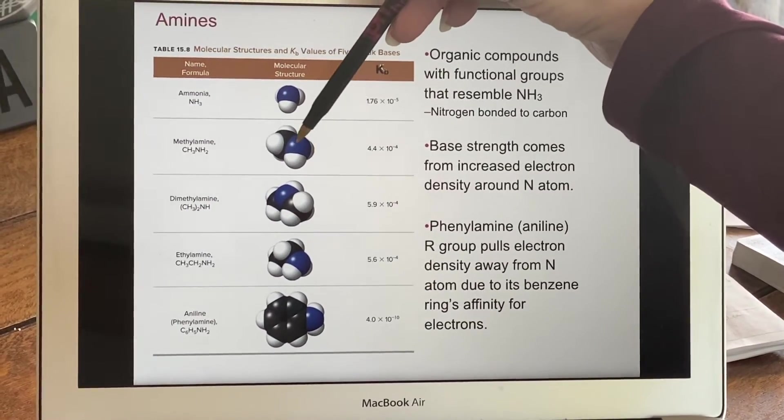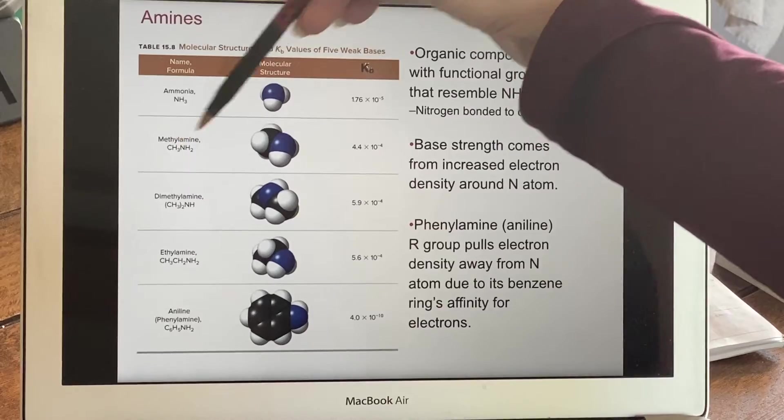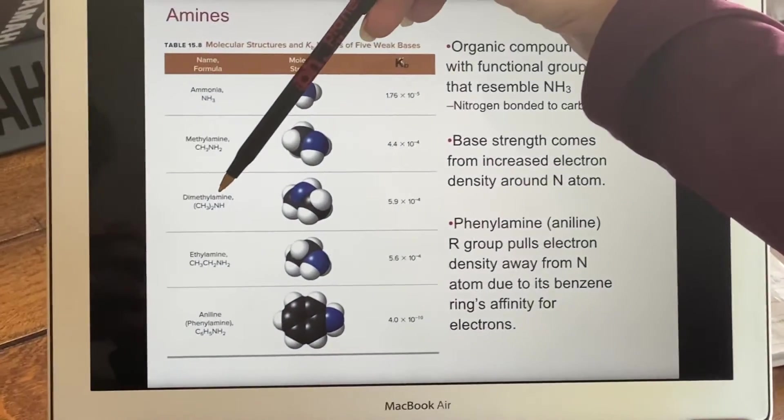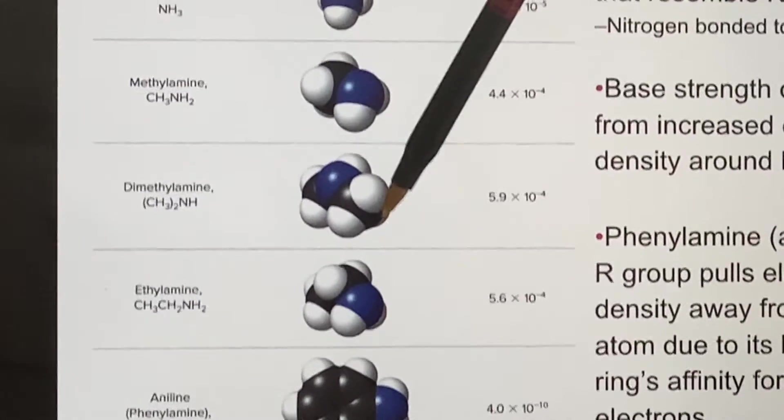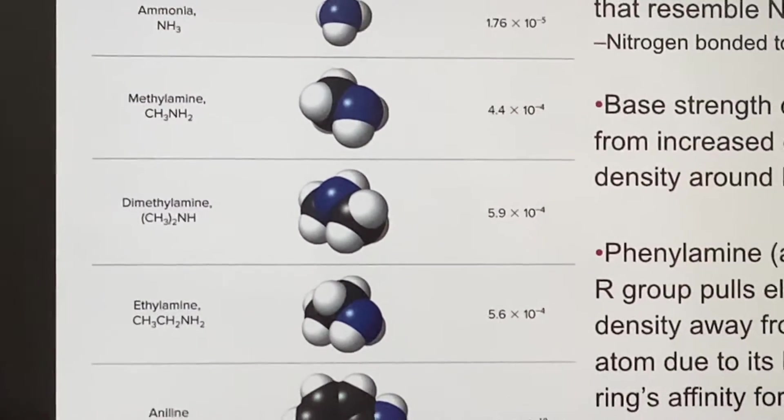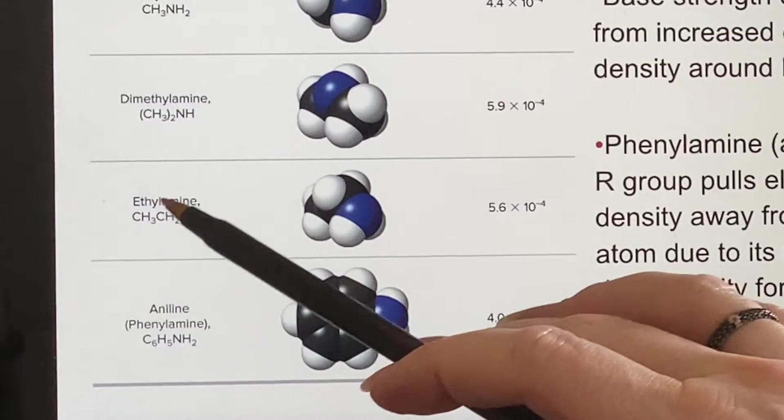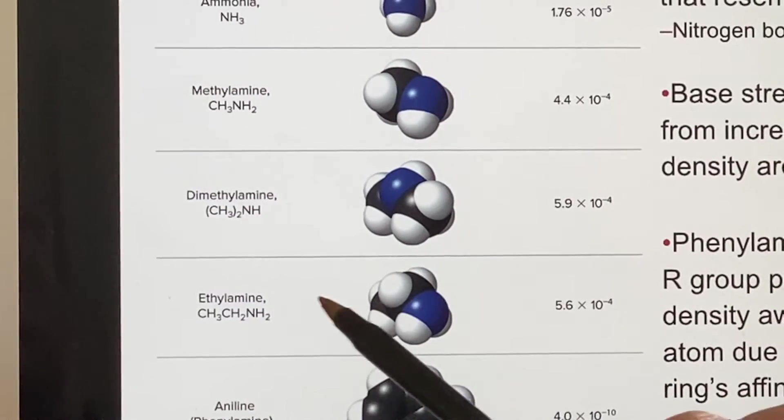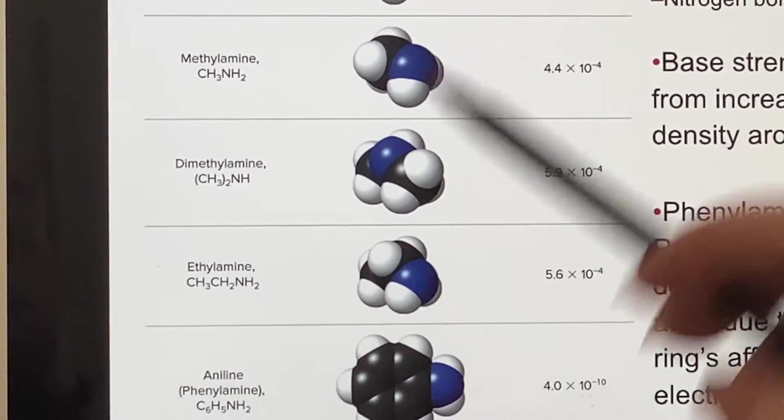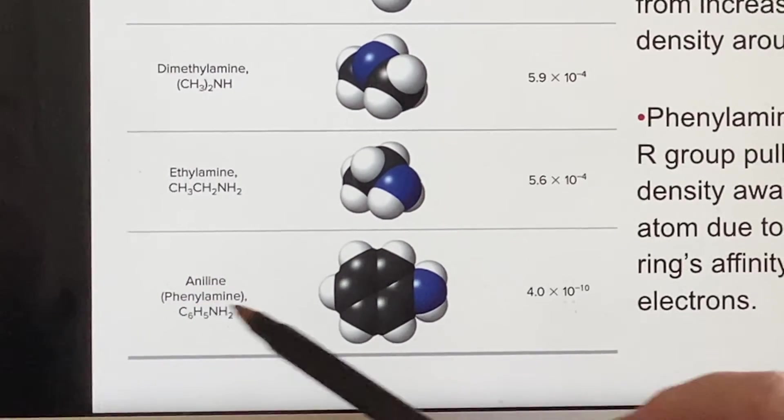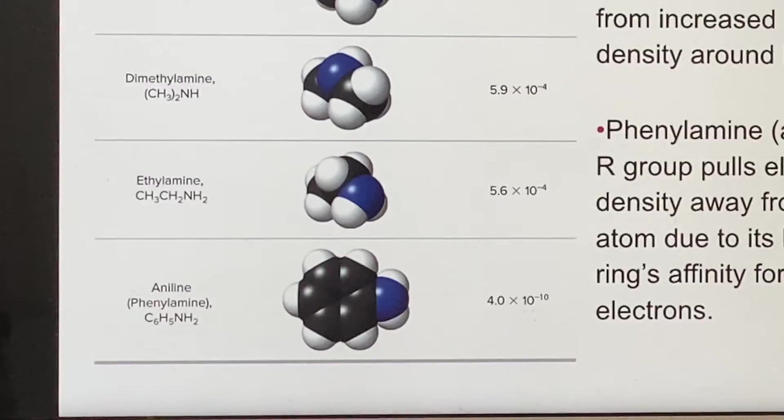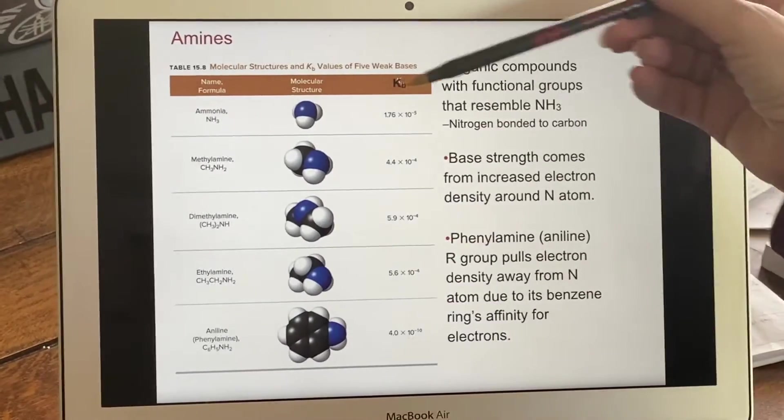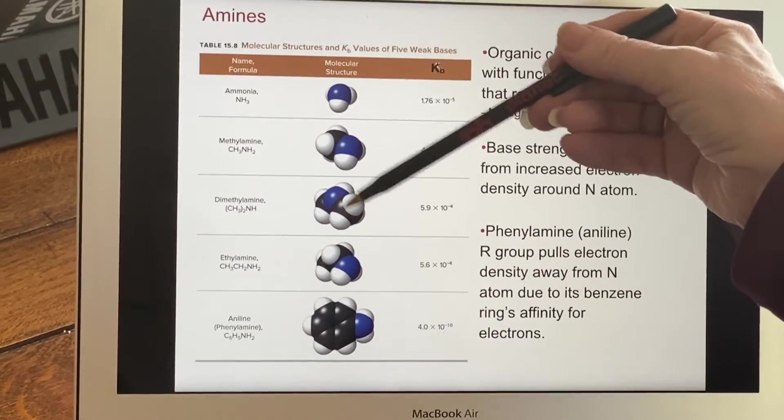But these amines are organic compounds with functional groups that resemble ammonia. So NH3 is the simple ammonia. You could replace one of those hydrogens with a methyl group. So the CH3 is in place of one of these hydrogens or even a dimethyl. So two methyl groups replacing two of the hydrogens. You could attach an ethyl group instead of a methyl group. So you see there's more of a stem here. It's a very short stem since there's only two carbons in it. Or you could even put something like this phenylamine together where you have a ring. So these organic compounds have nitrogen that's bonded to carbon once you get away from this one. So nitrogen bonded to carbon in these areas.